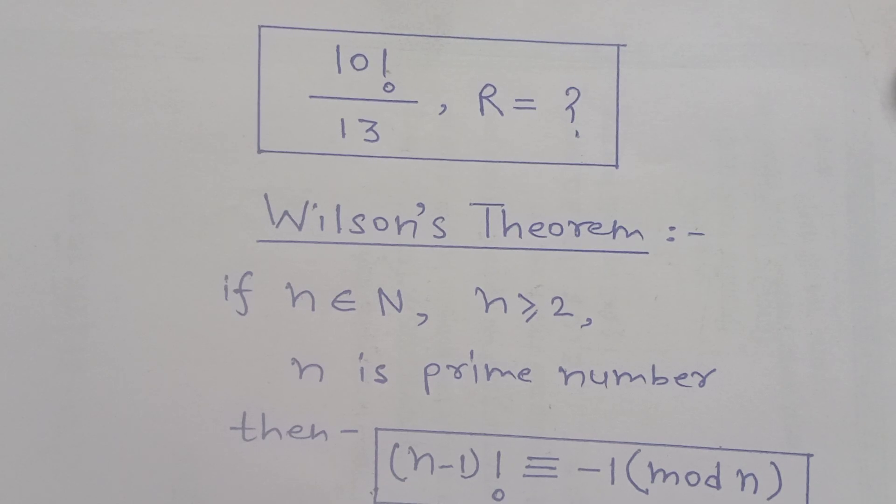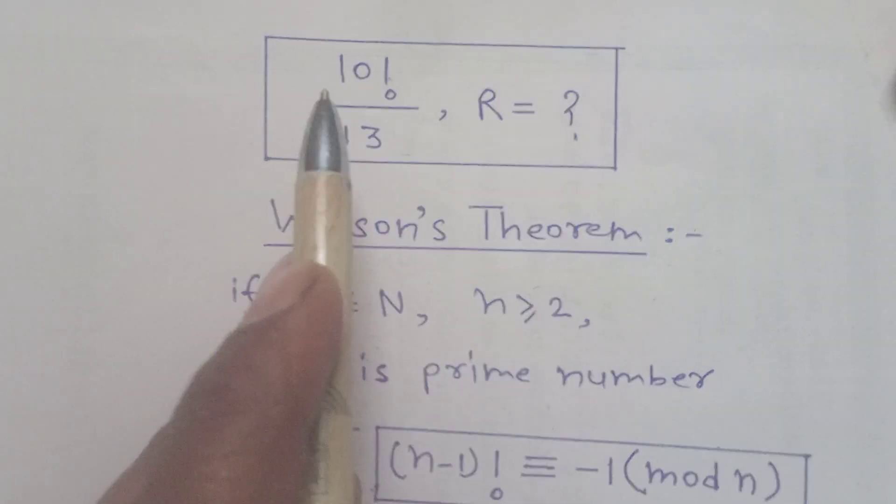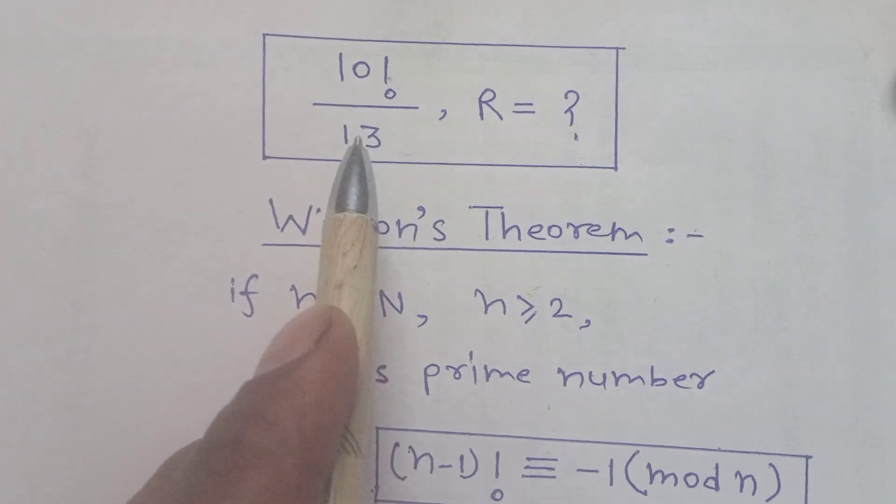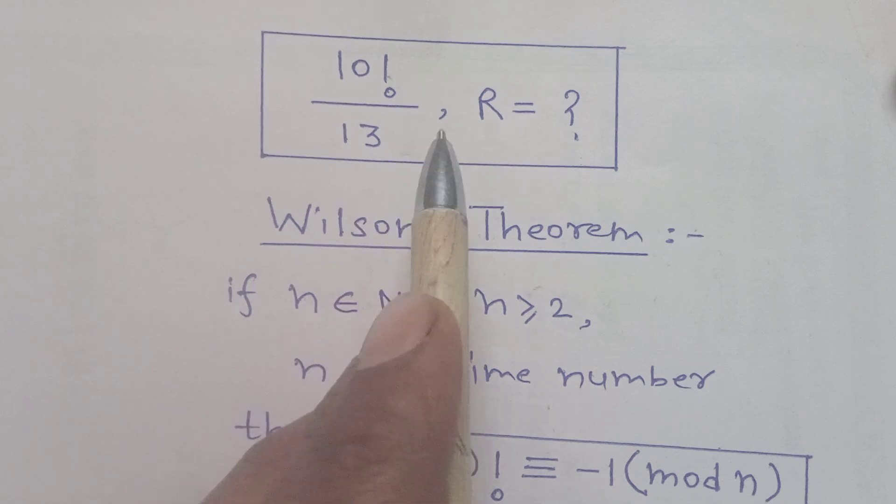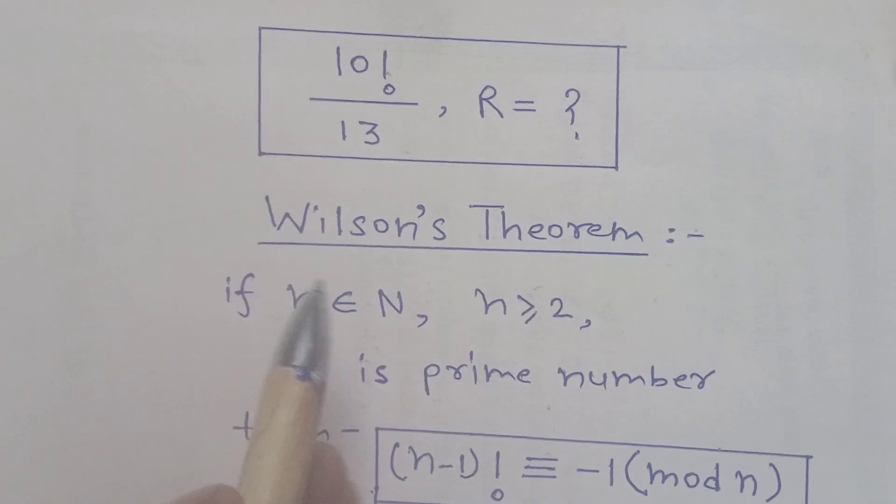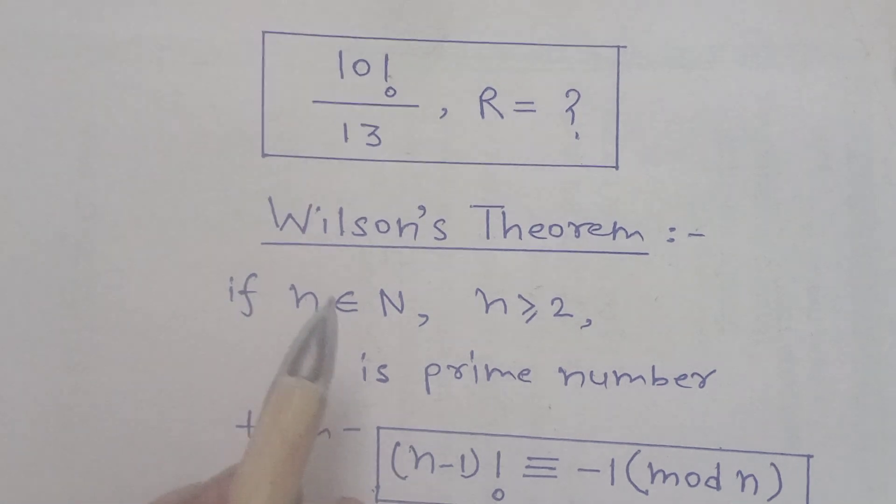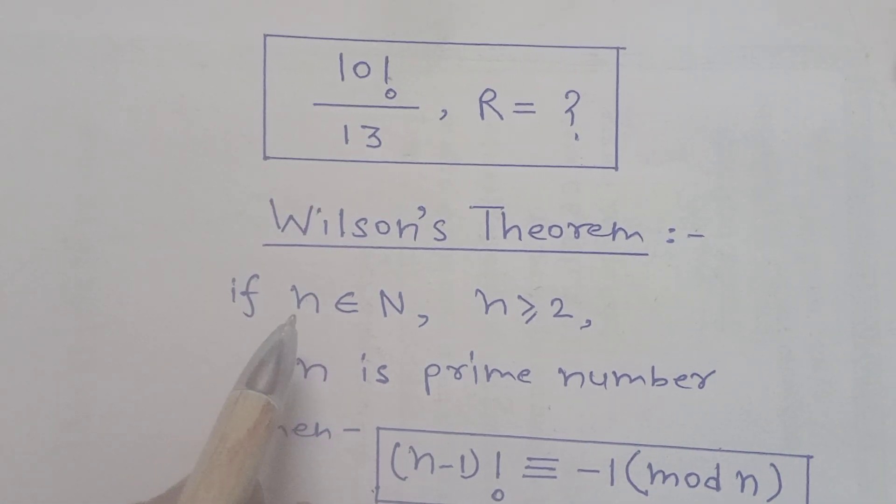Hello friends, in this video we discuss Wilson's theorem. We have a problem: 10 factorial is divided by 13, then find the remainder. So first we discuss Wilson's theorem, then we solve this problem.